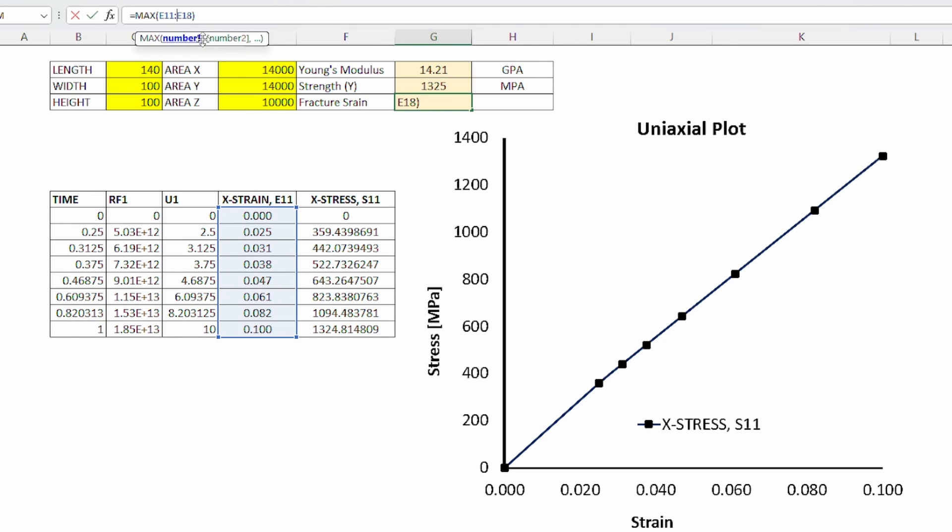And if you do the same thing in terms of the strain, the fracture strain will be the strain that corresponds to that point, which is essentially the maximum strain on the system, which is 10%. So we get a picture of what the stress-strain data in the system will look like.